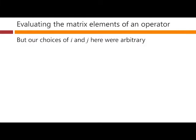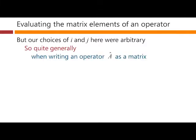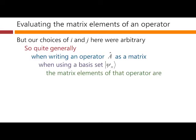Our choices of i and j here, of course, were quite arbitrary. So quite generally, when writing an operator A as a matrix, we can use this same technique for every single matrix element. When using a basis set ψn, the matrix element of this operator are aij is ⟨ψi|A|ψj⟩.